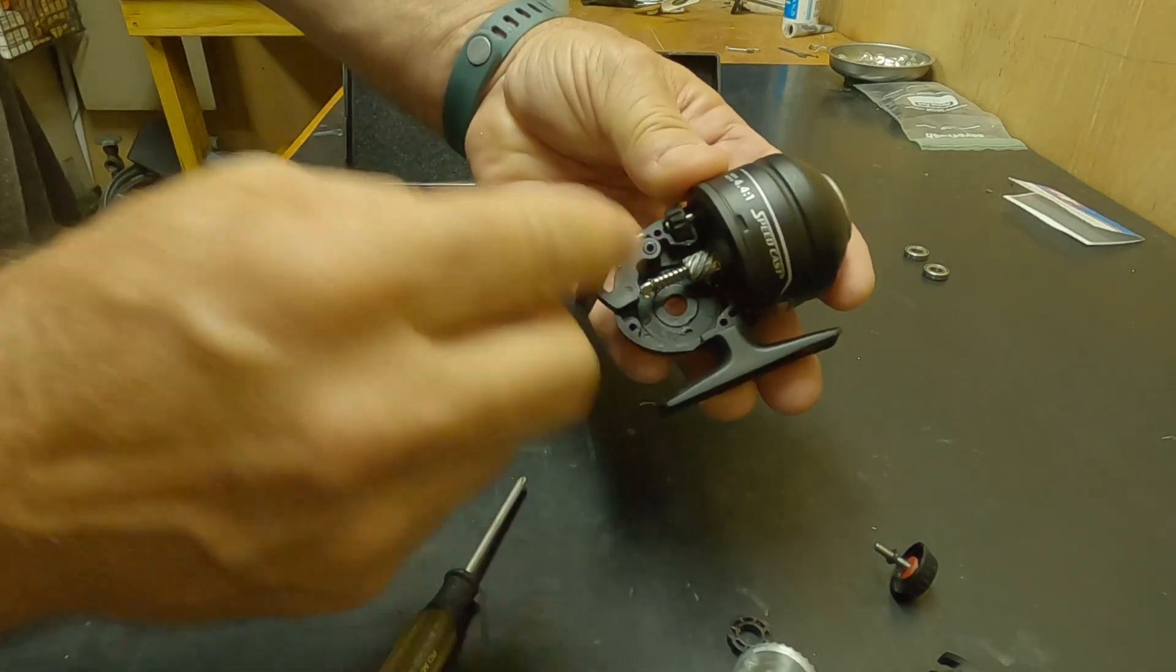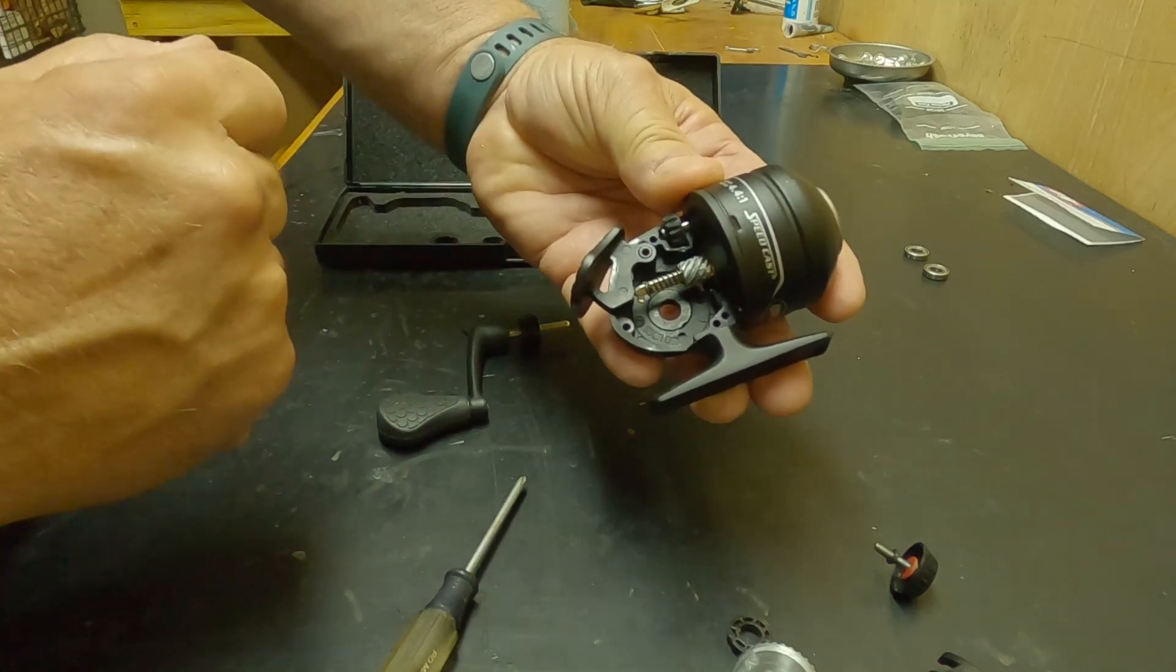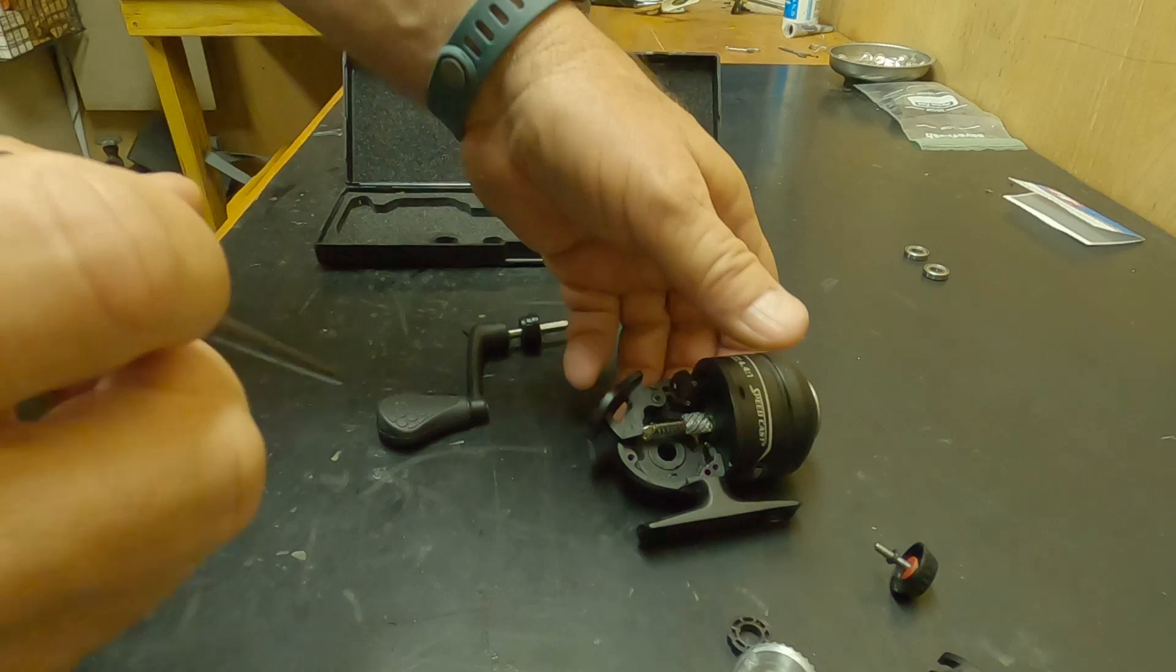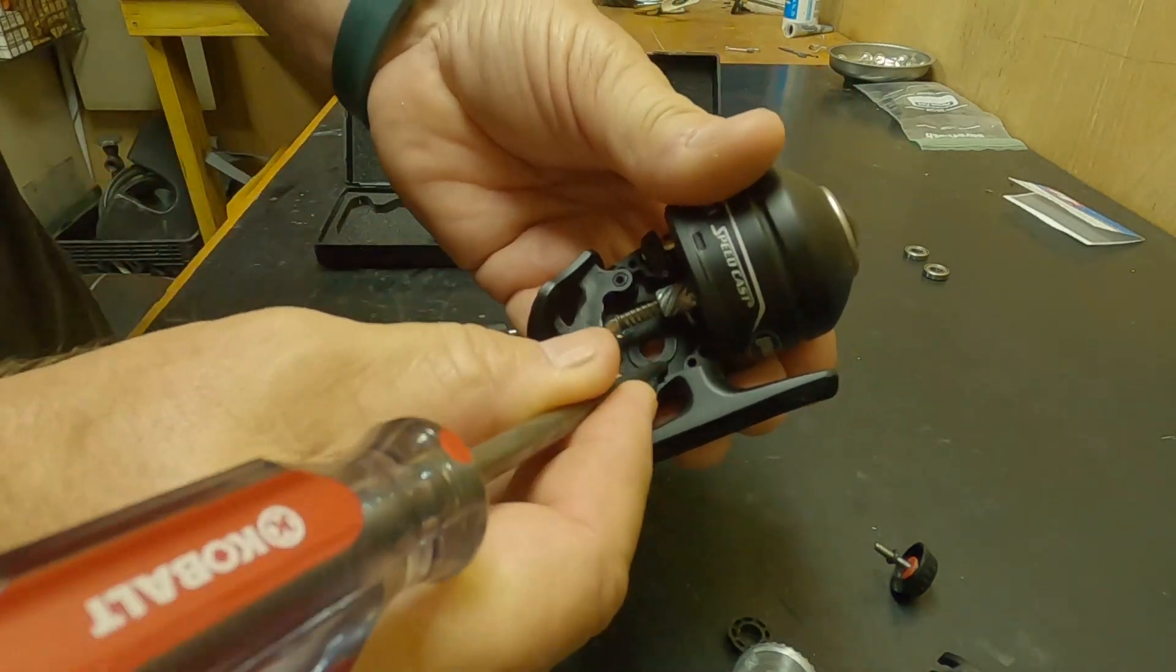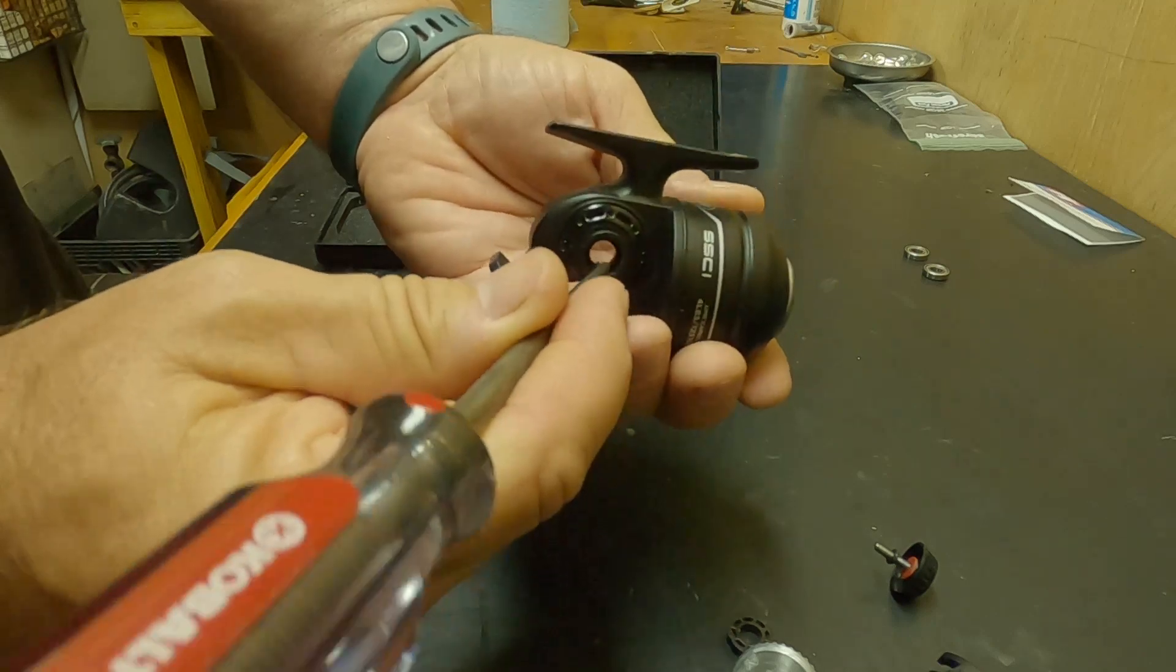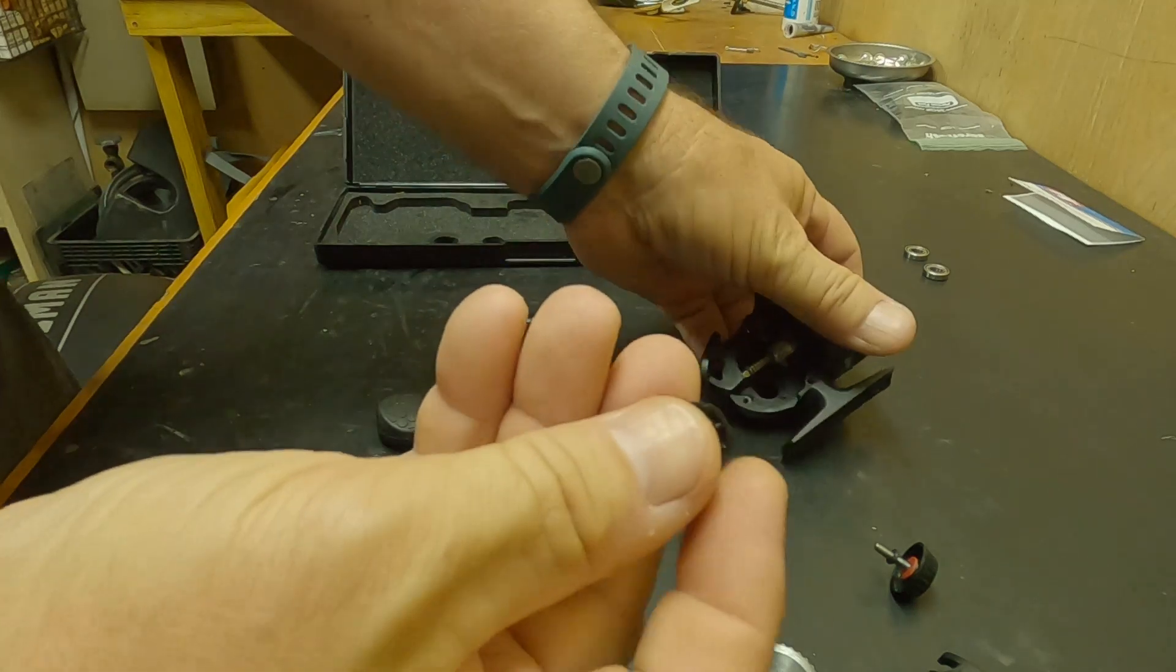The other one is tucked down in there. I want to pry that out. Alright, so I got this little awl right here, go ahead and pop out that other plastic bushing.